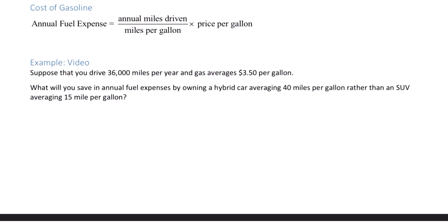For example, suppose that you drive 36,000 miles in a year and gas averages $3.50 per gallon. What will you save in annual fuel expenses by owning a hybrid car averaging 40 miles per gallon rather than an SUV averaging 15 miles per gallon?